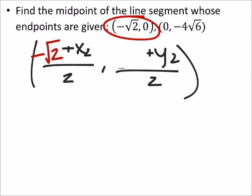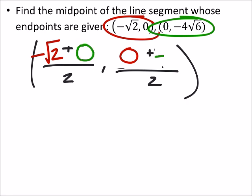Then my x2, y2 values will come from the second point. So x2 is 0 and y2 is negative 4 times the square root of 6. So this ends up being negative square root of 2 over 2.